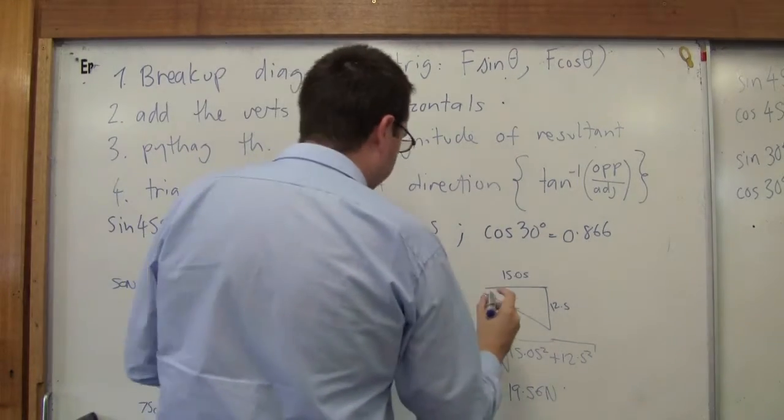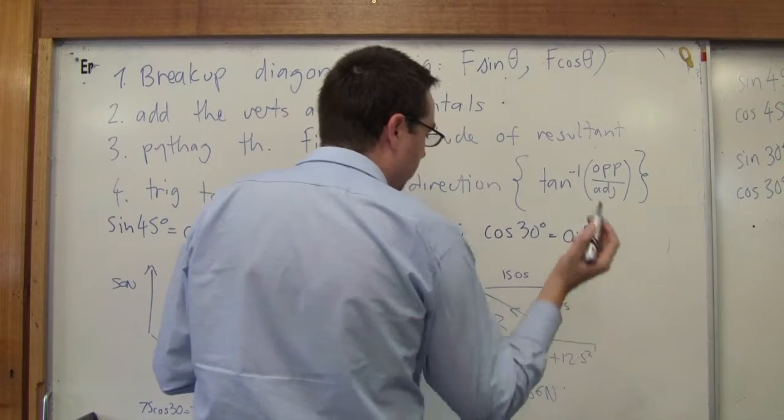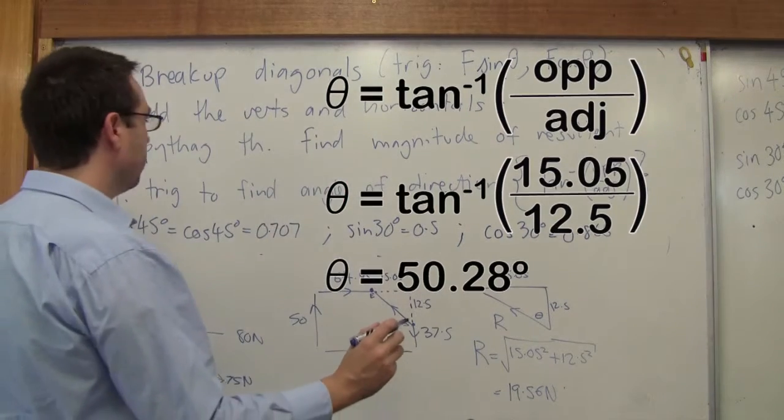Okay, now we have to give ourselves an angle. I don't care where we measure our angle from. I'm happy to measure our angle from here. That's fine by me. So I've said that theta equals, right? So we're now at step four. Step four, we use trigonometry.